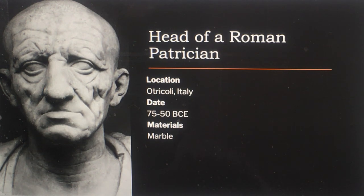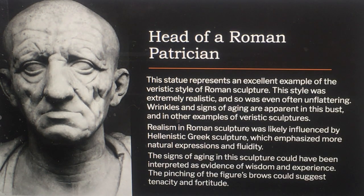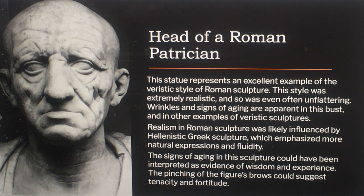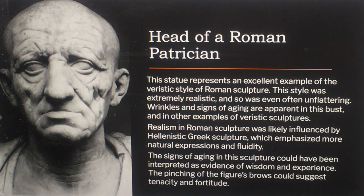The Romans actually did portraits of people, which was unusual. This is an excellent example of the veristic style of Roman sculpture. The style was extremely realistic and often even unflattering. The wrinkles and signs of aging are apparent in this bust. The realism was likely influenced by Hellenistic Greek sculpture, which emphasized more natural expressions and fluidity. The signs of aging could be interpreted as evidence of wisdom and experience, and the pinching of the figure's brows could suggest tenacity and fortitude.